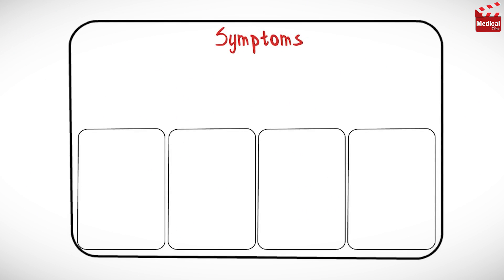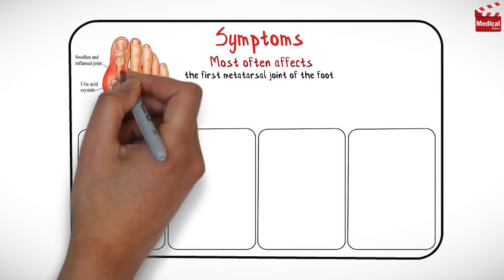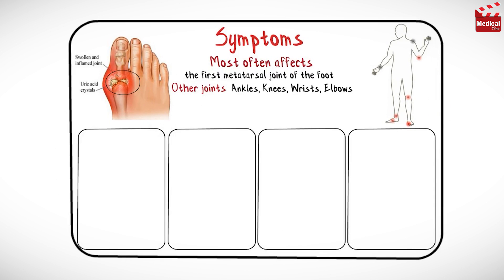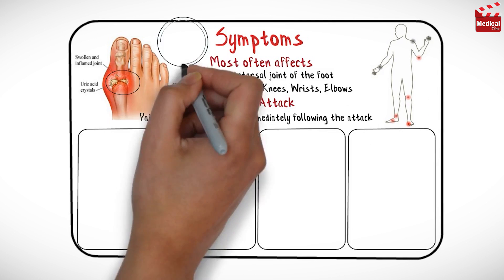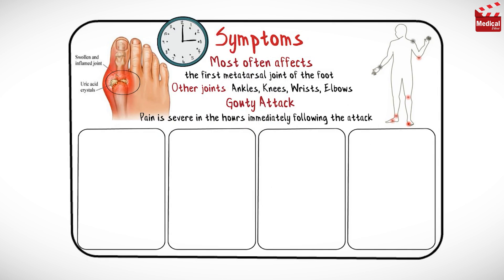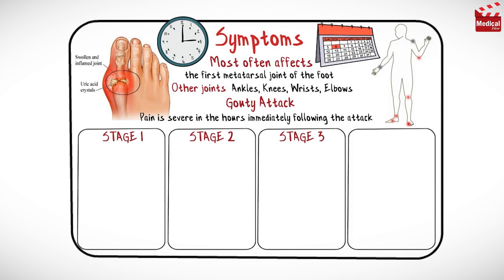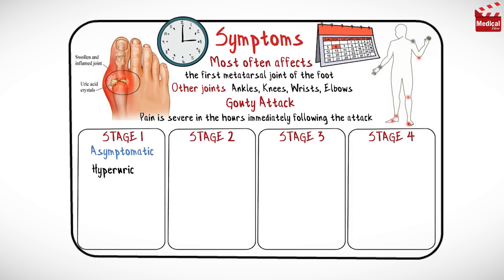Now let's talk about the symptoms of gout. Gout most often affects the first metatarsal joint of the foot, or the base of the big toe, and it can affect other joints as well, like those in the ankles, knees, wrists, and elbows. It causes what is called a gouty attack, where the pain is most severe in the hours immediately following the attack, then lessens over time, though discomfort and swelling can last for days or weeks. Gout has four distinct stages. During the first stage, the patient develops hyperuricemia — urate levels rise but don't produce symptoms.